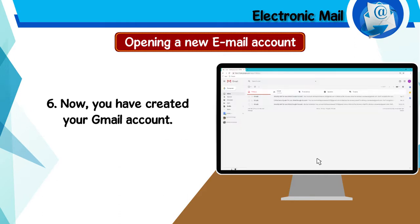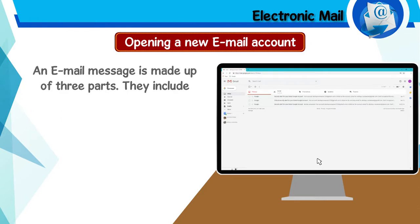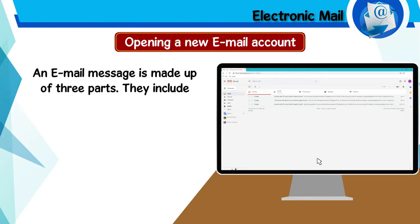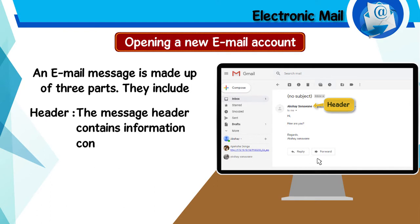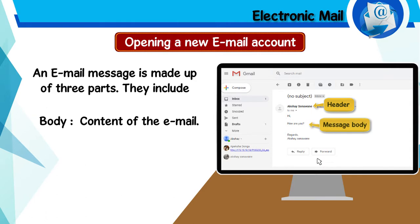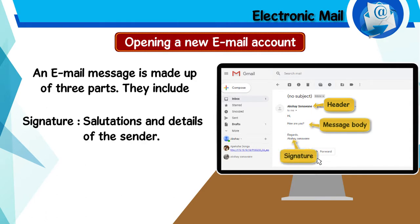Step 6: Now you have created your Gmail account. An e-mail message is made up of three parts: Header, Body, and Signature. The message header contains information concerning the sender and recipient. The body contains the content of the e-mail. The signature contains salutations and details of the sender.